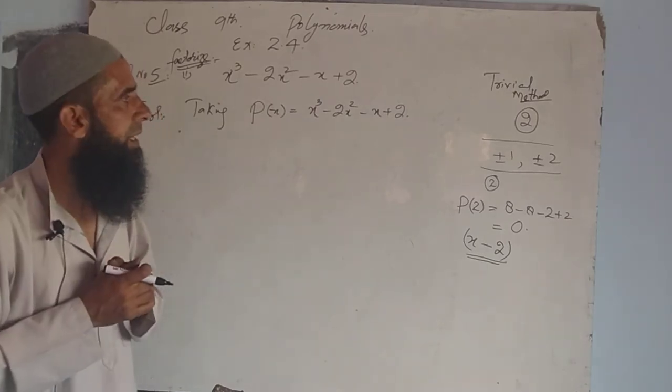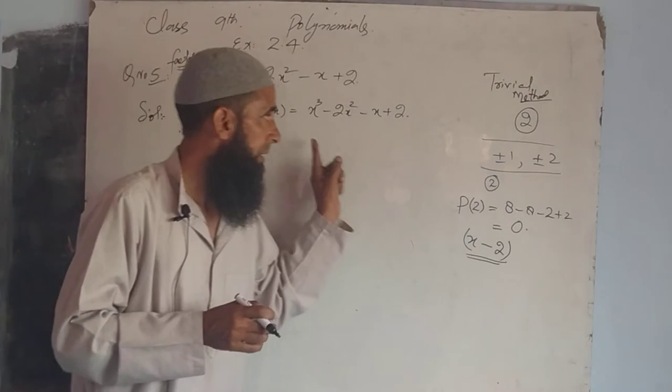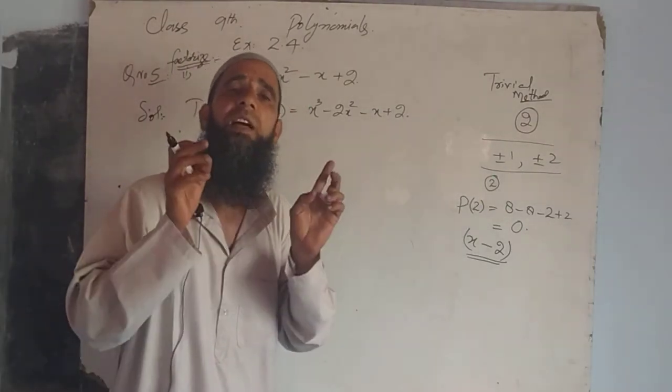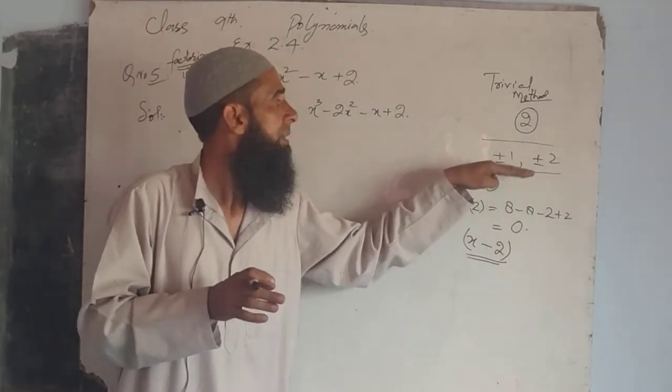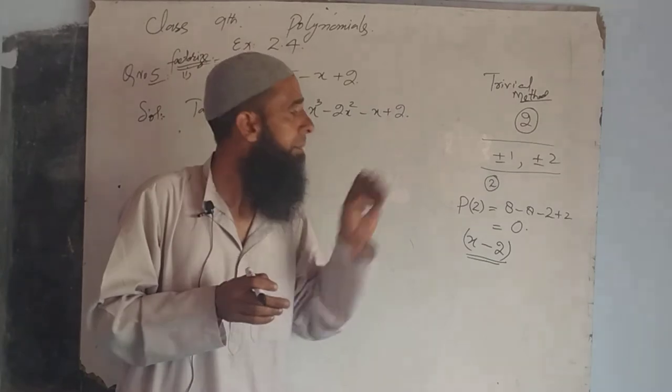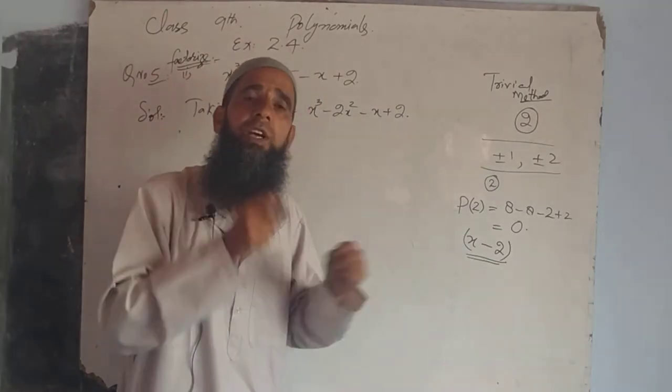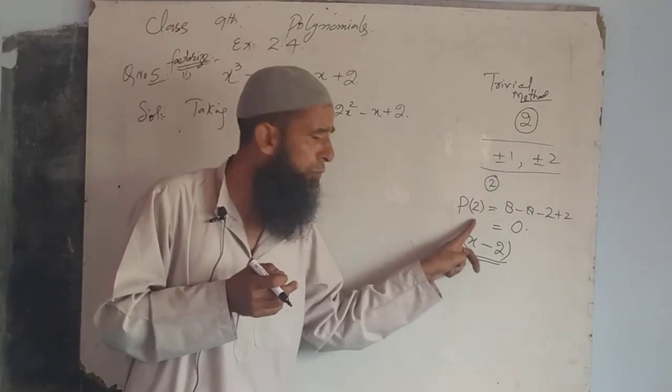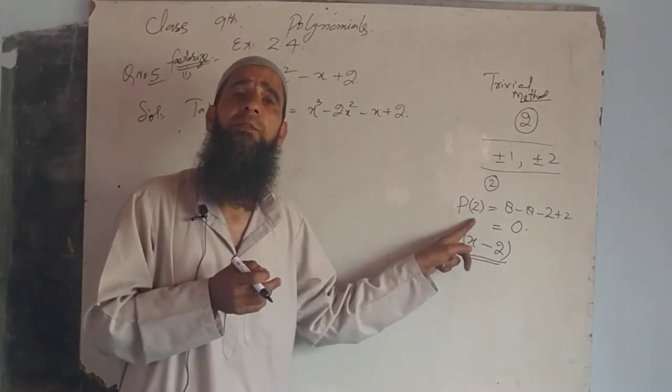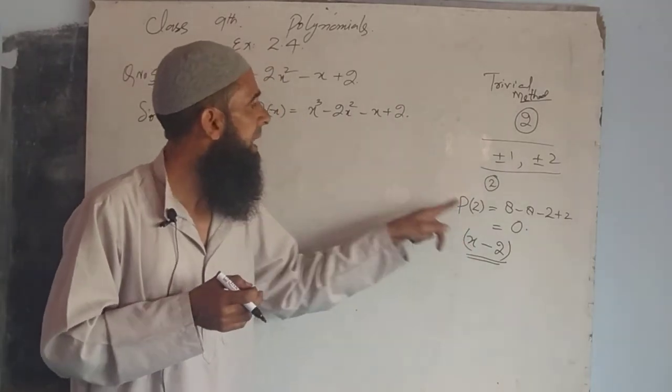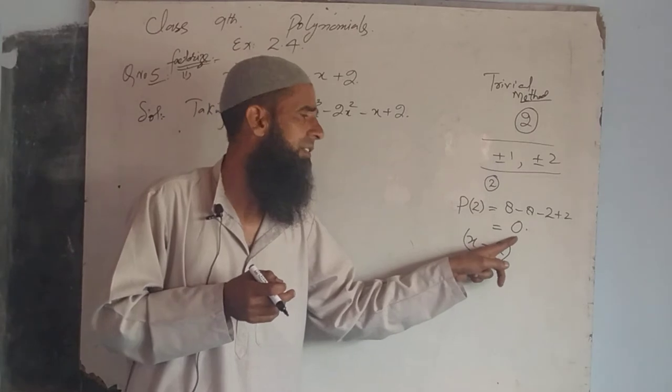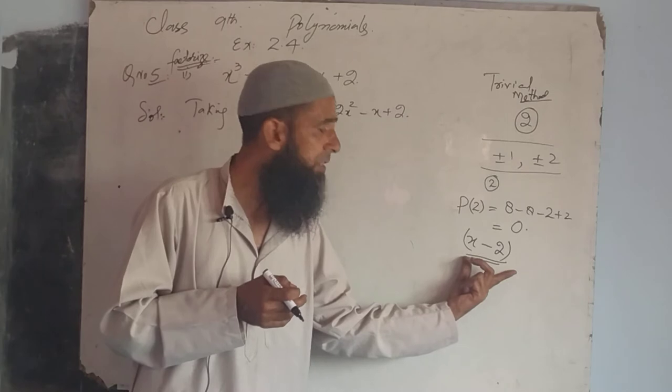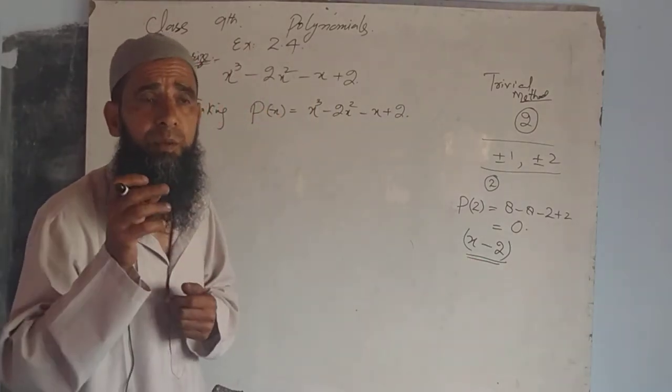Let me revise the trivial method: we take the constant term and look at its factors (plus one, minus one, plus two, minus two), choose from these, and test which gives zero. The value at x equals 2 gives us zero, so by factor theorem, x minus 2 is a factor of the given polynomial.